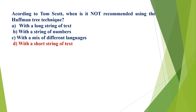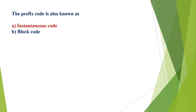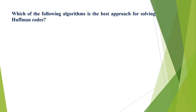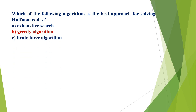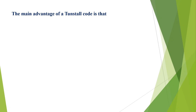The prefix code is also known as: A) instantaneous code, B) block code, C) convolutional code, D) parity bit. The correct option is A, instantaneous code. Which of the following algorithms is the best approach for solving Huffman codes? A) exhaustive search, B) greedy algorithm, C) brute force algorithm, D) divide and conquer algorithm. The correct option is B, greedy algorithm.